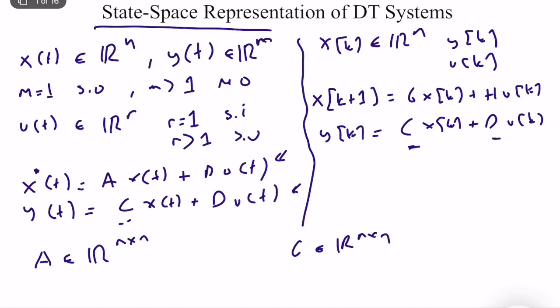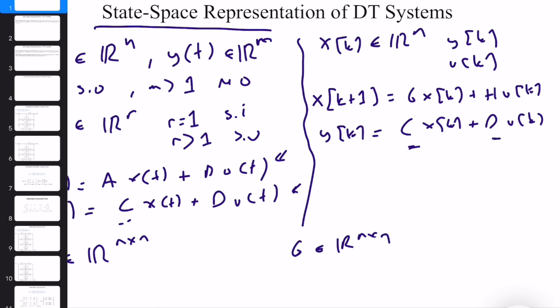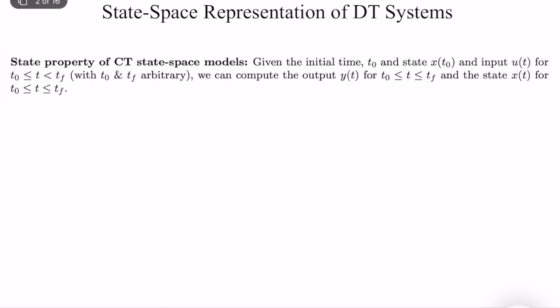The most important matrix is obviously A (or G), because they are the system matrices, and their eigenvalues will determine the stability and other core behavior of the system. Of course, C and B are also very critical from many perspectives. Let's remember from continuous-time systems: the state property of a continuous-time state-space model.